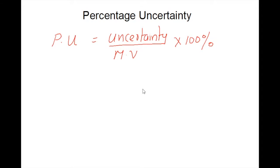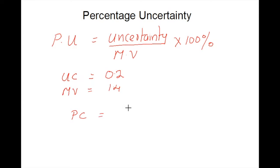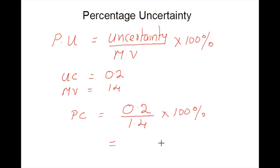Let's check how to find the percentage uncertainty of a value. For example, if the uncertainty of the measured value is 0.2 and the measured value is 1.4, we find the percentage uncertainty by calculating 0.2 divided by 1.4 times 100%. By solving this, we get the percentage uncertainty as 14.3%.